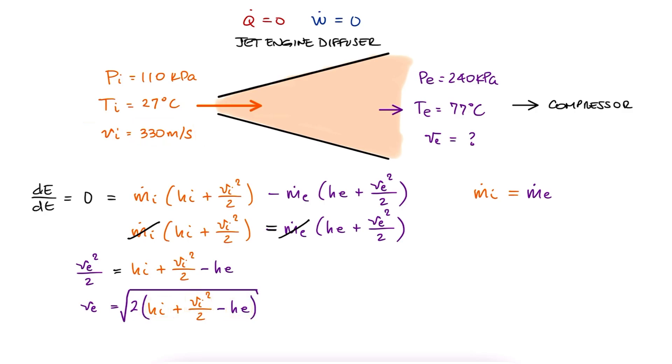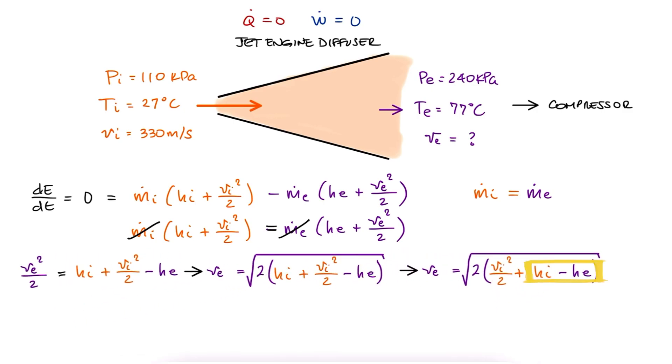After the specific heat lecture, we learned that we can also calculate this change in enthalpy as the specific heat at constant pressure, Cp, times the change in temperature. And since the temperature change is not that big, let's use an average Cp value.